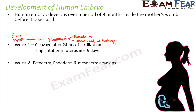So therefore, implantation in the uterus occurs 6 to 9 days after fertilization. All of these mitotic divisions keep happening during the first 6 to 9 days, and implantation means that this entire structure gets attached to the endometrium of the uterus. That is done by week 1.